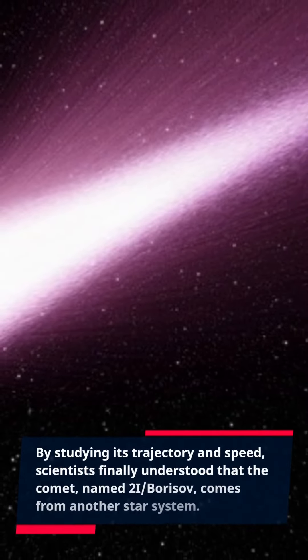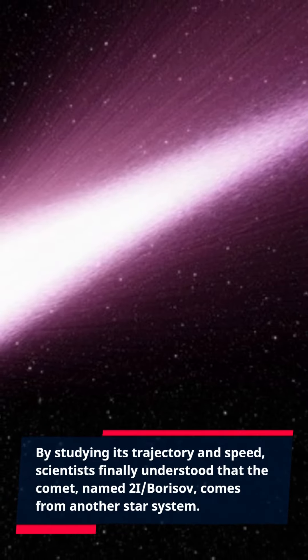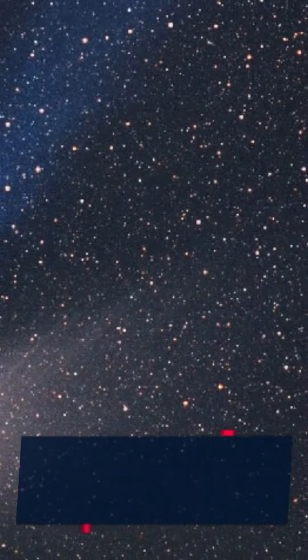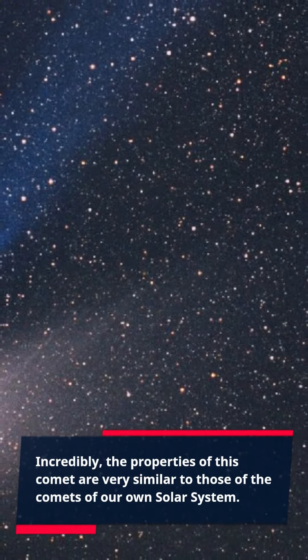By studying its trajectory and speed, scientists finally understood that the comet, named 2I/Borisov, comes from another star system. Incredibly, the properties of this comet are very similar to those of the comets of our own solar system.